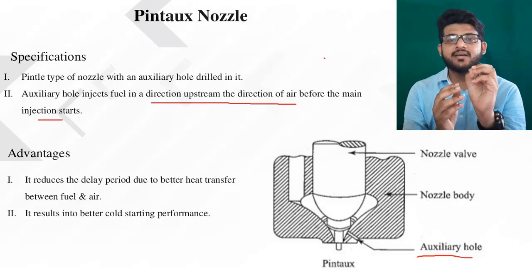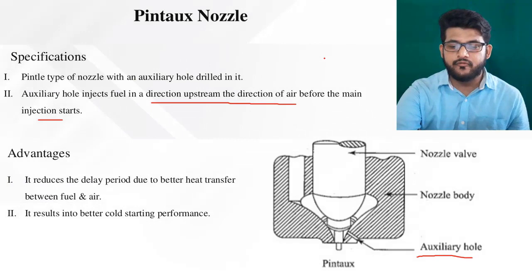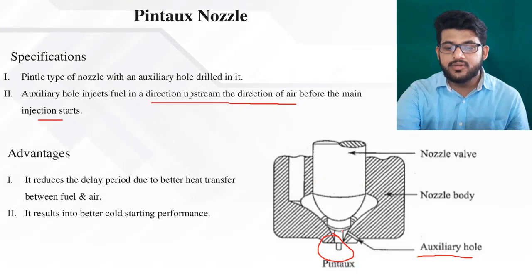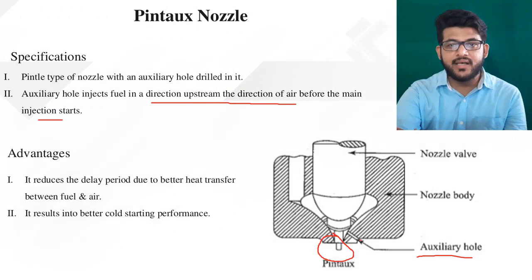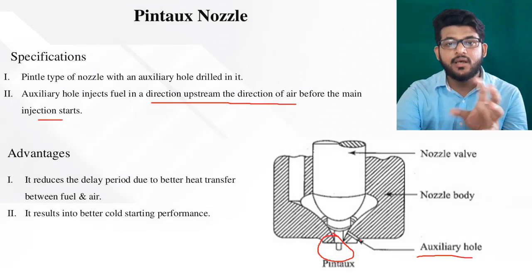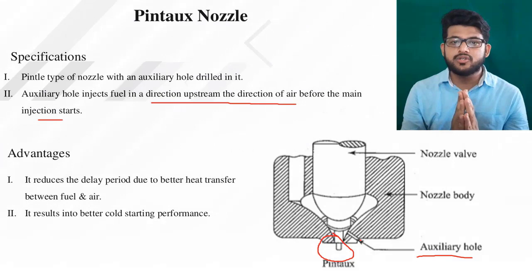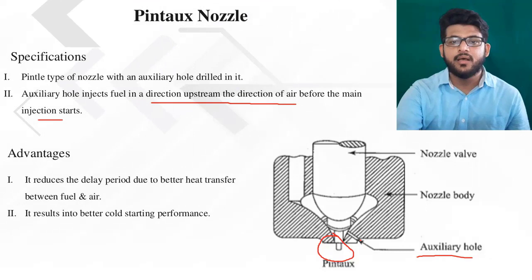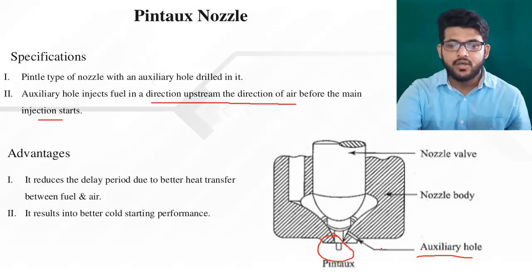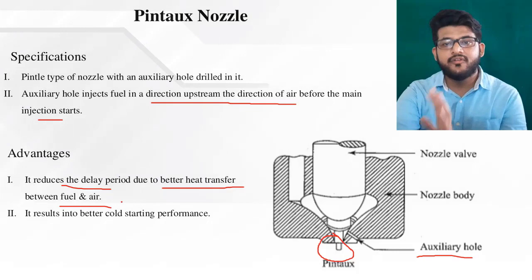The logic behind the pintaux nozzle is that we inject some amount of fuel from the auxiliary hole before the real main injection. So fuel is already present before the main injection begins, reducing ignition delay. When the main injection occurs, fuel is already mixed with air and has nearly reached the self-ignition temperature of diesel. So we inject fuel from the auxiliary hole first, reducing ignition delay, and then inject from the main nozzle — ignition delay is thus significantly reduced.